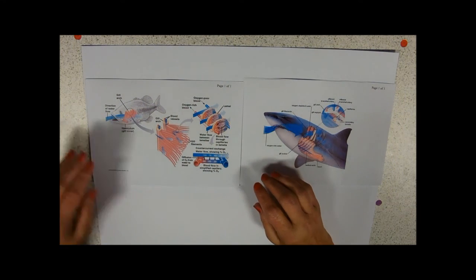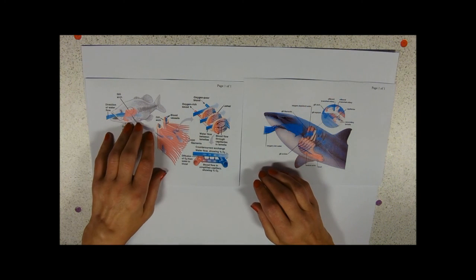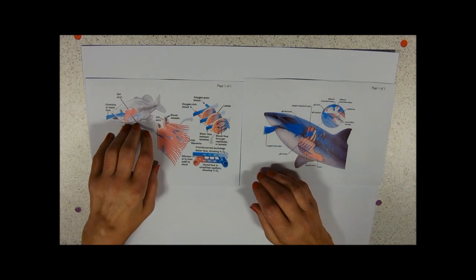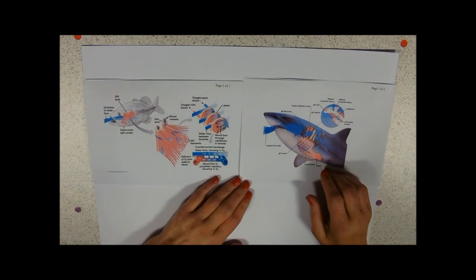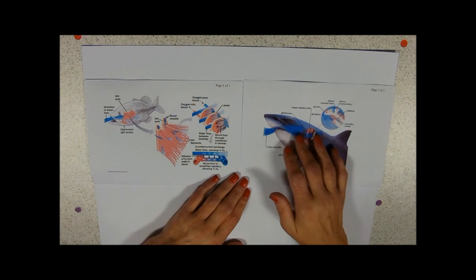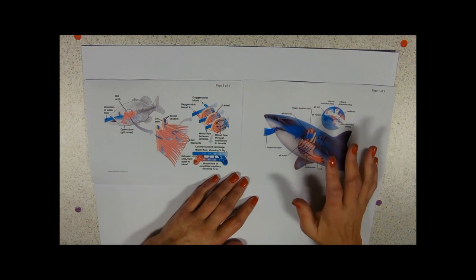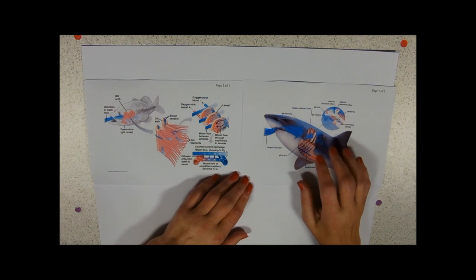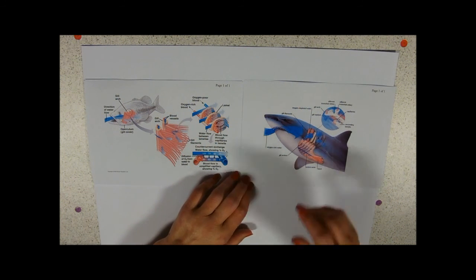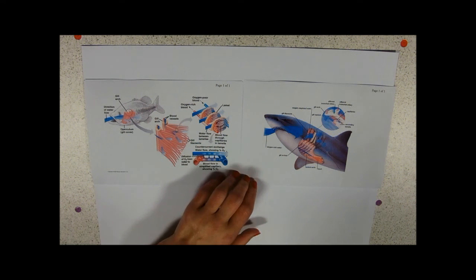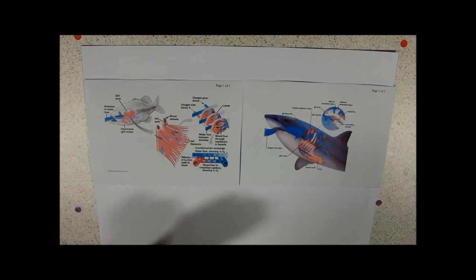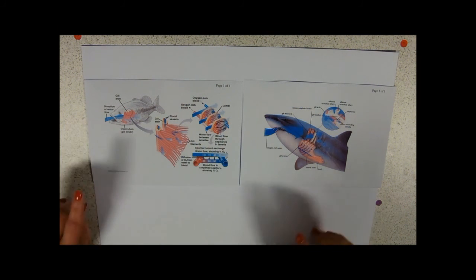We are talking about bony fish, which are things like goldfish and trout and all the things you think of as being fish, but also what we call cartilaginous fish, things like sharks and mantas and rays that don't have a bony skeleton. They have a skeleton made out of cartilage and there are slight differences that you need to know between the two.